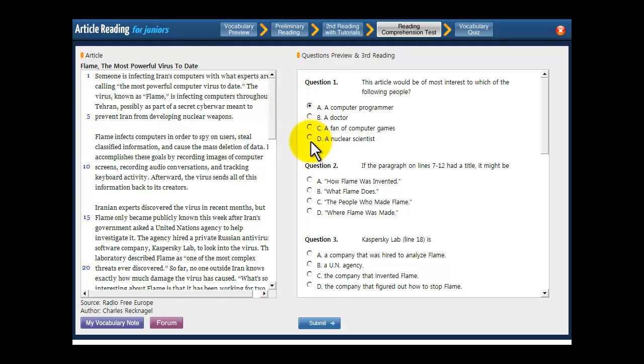And D, a nuclear scientist. A nuclear scientist might be interested in it again, but is probably not going to be the most interested of these four people. Of these four, a computer programmer is the best choice because Flame is a computer program.